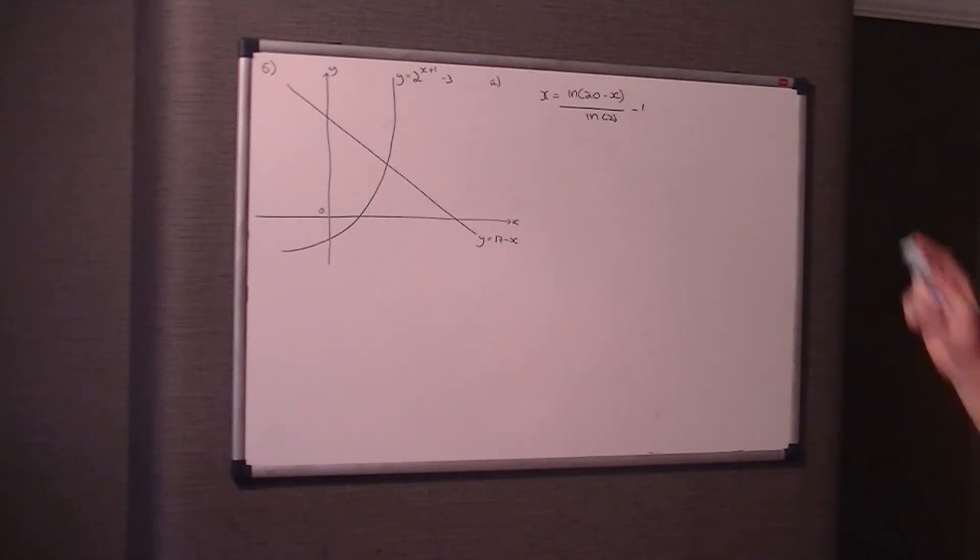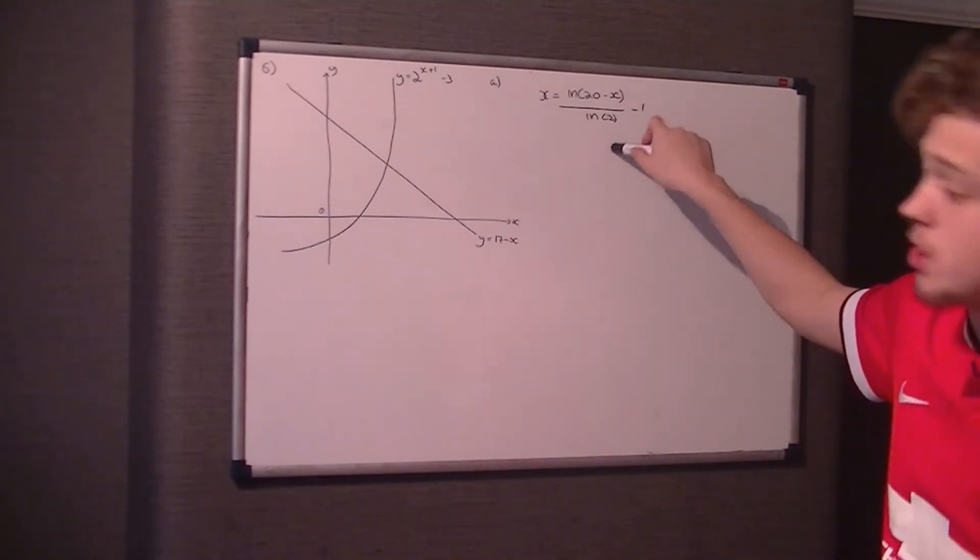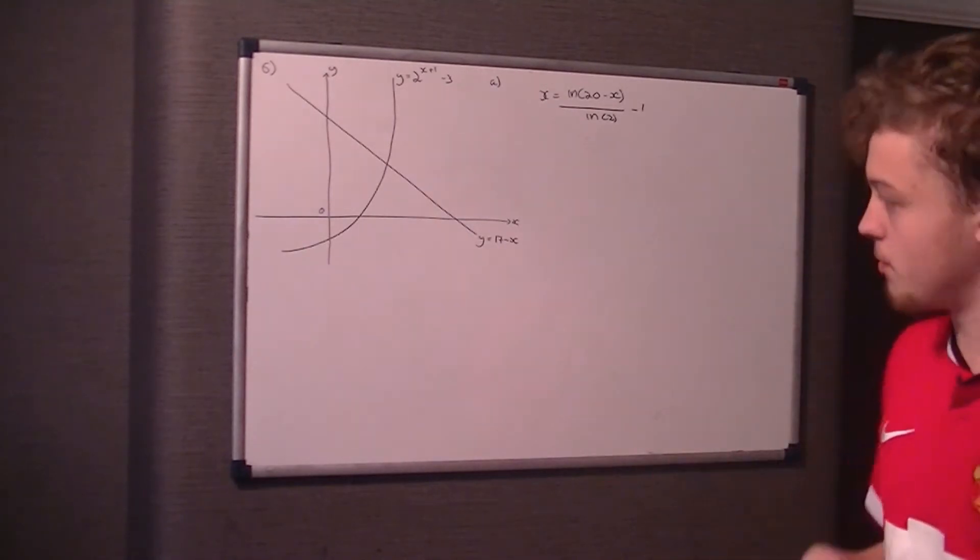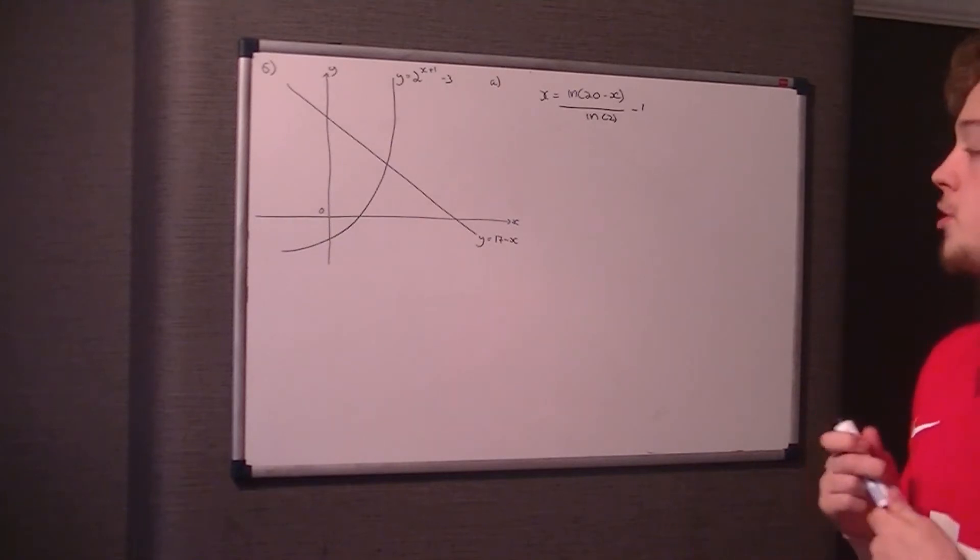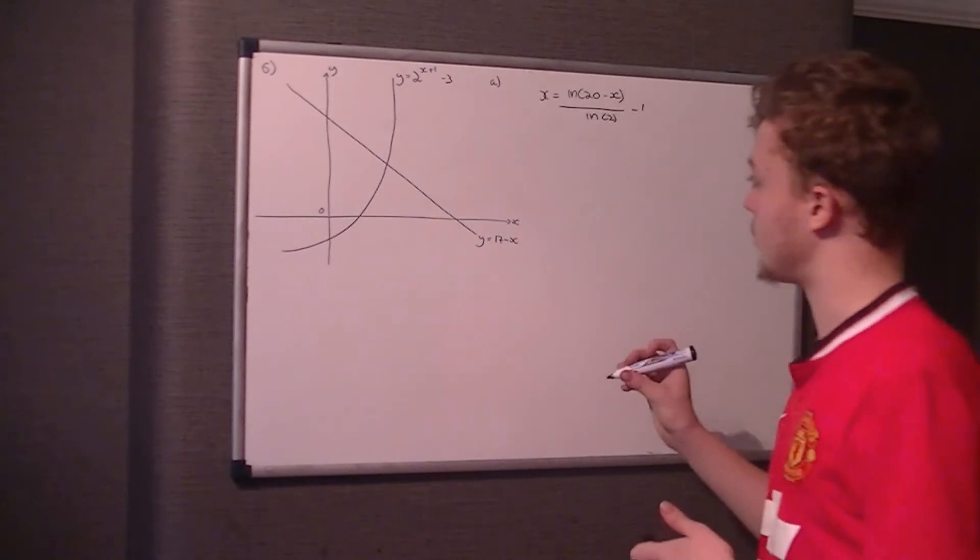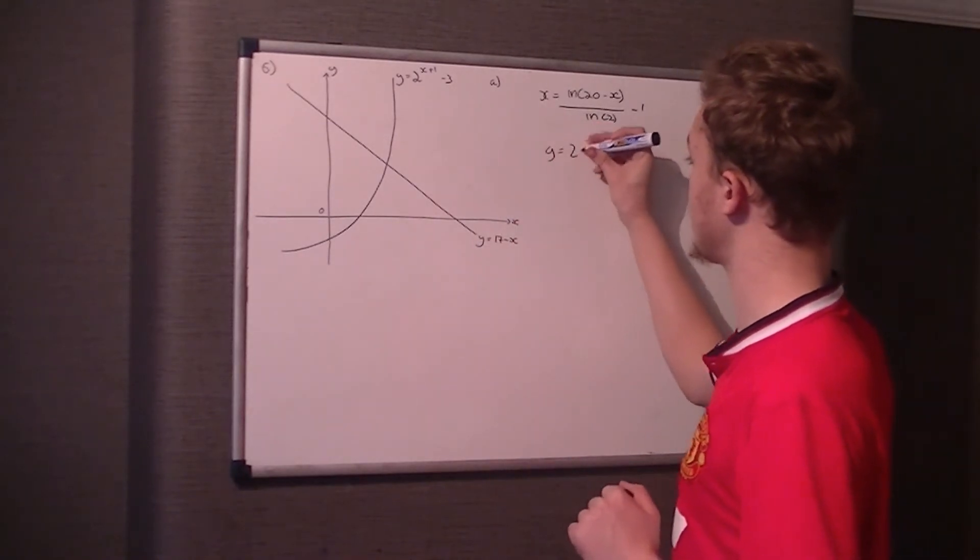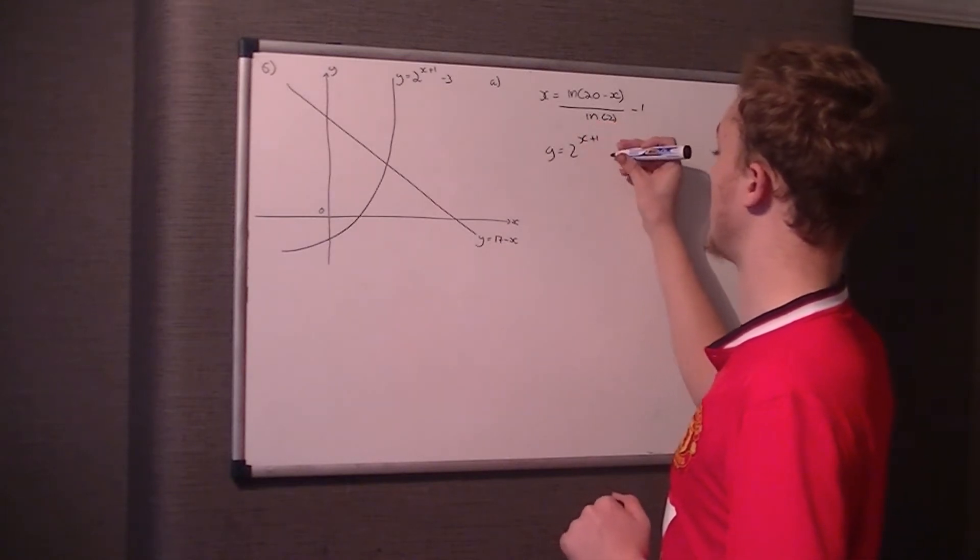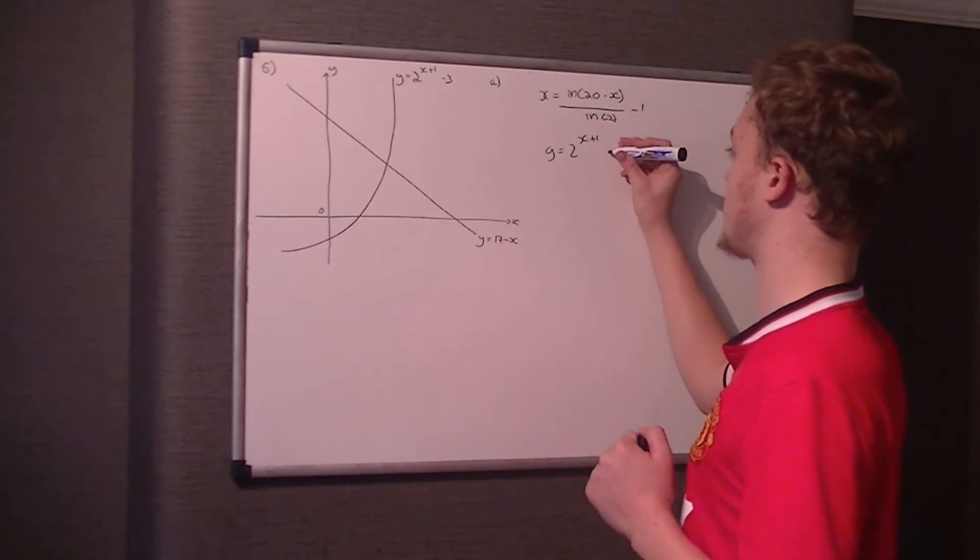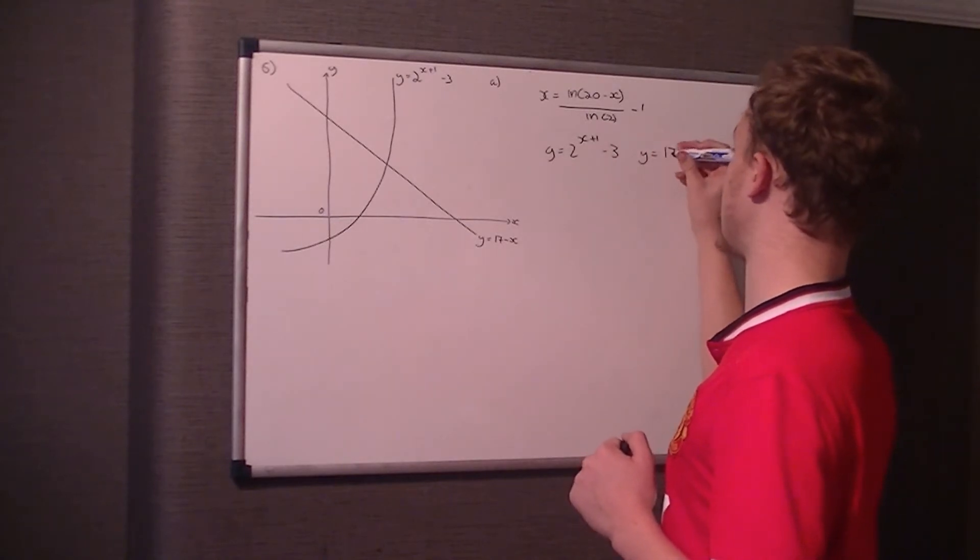Right, so obviously, without looking at the next question, this is obviously going to be some iteration formula. So this first part is just getting you to build it up, so you can still do part B, even if you don't get this bit. Okay, so the first thing I would do is write down your two equations. So y equals 2 to the power of x plus 1 minus 3, and y equals 17 minus x.